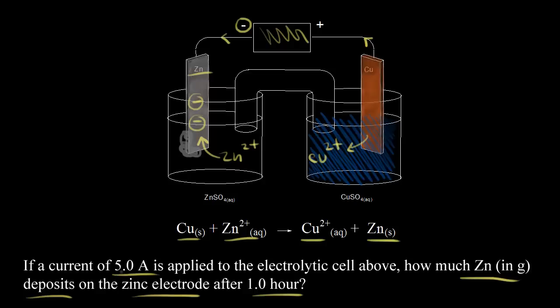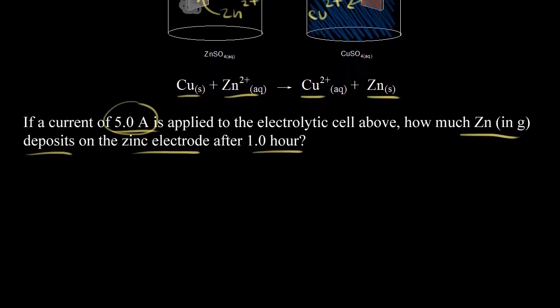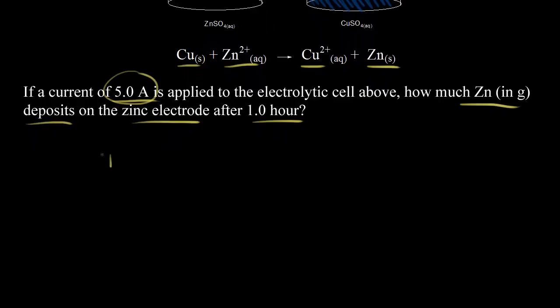First, we need to think about the definition for current. Current is equal to charge over time. In physics, I is equal to current, charge is represented by Q, and time is lowercase t.